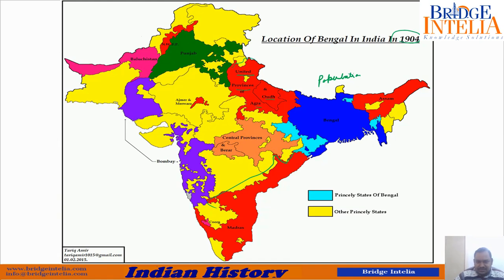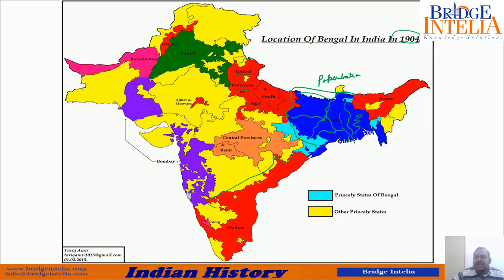This blue colored region on the map was Bengal. Today if you look at India's map, this is Bihar, this is Jharkhand, this part is Odisha, this part is actually Bangladesh, and the remaining is West Bengal. So a huge region — all of this together was a single unit known as Bengal. There was no Odisha, no Bihar, no Jharkhand, no Bangladesh.